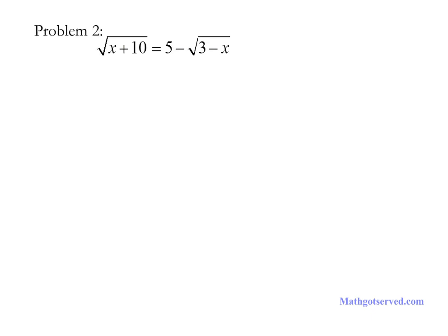For problem 2 we are to solve the equation: the square root of 10x plus 10 equals 5 minus the square root of 3 minus x. The ultimate goal is to eliminate the radicals and then solve the resulting algebraic equation. We notice we have one radical isolated on the left side, so by squaring both sides of the equation we can eliminate that radical.